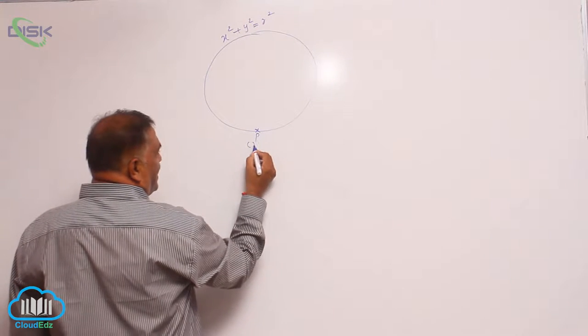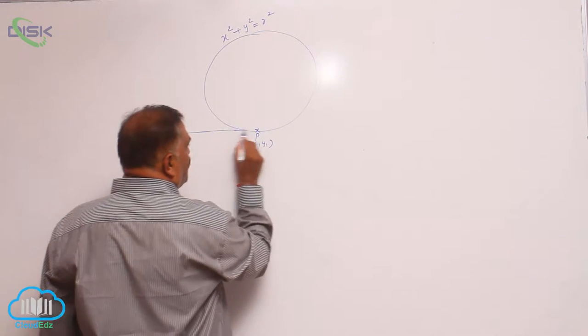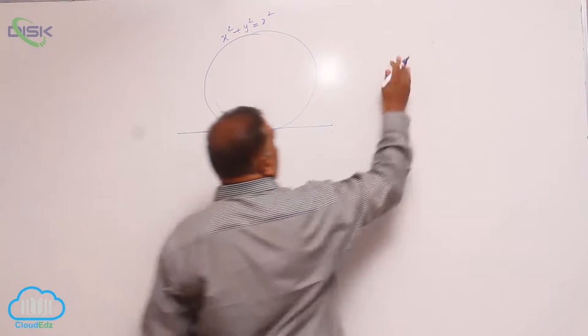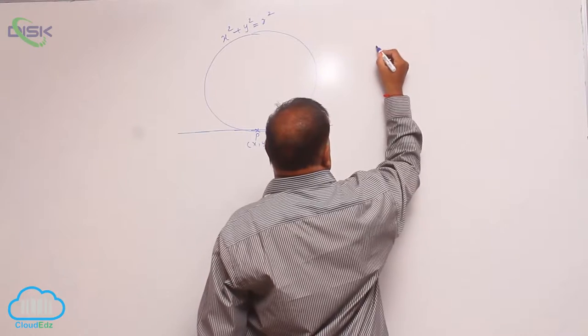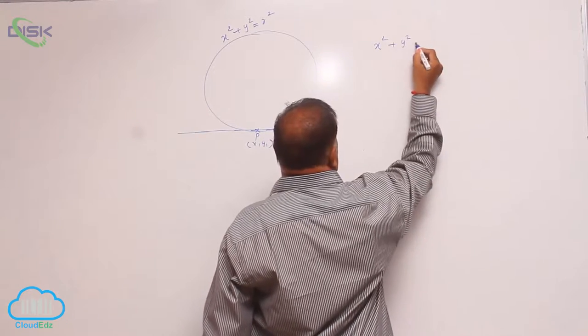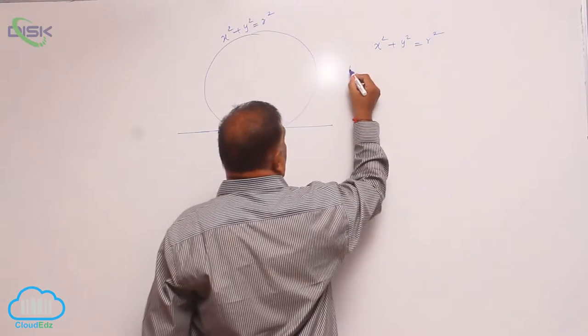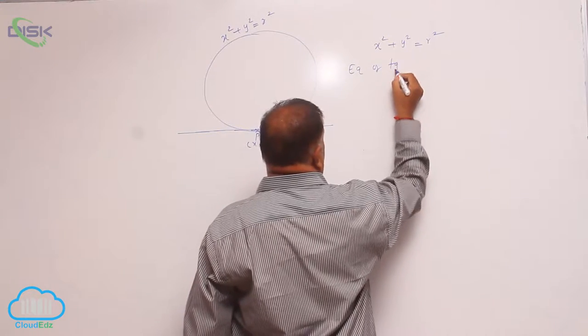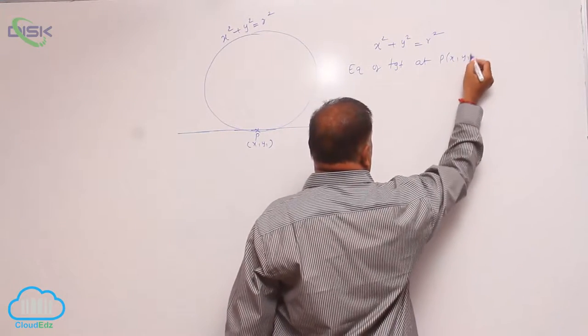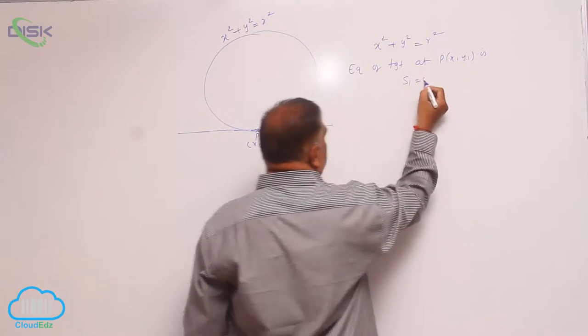Let us consider point P(x₁, y₁). At this point, if you want to write a tangent equation, the circle equation is x² + y² = r². The equation of tangent at P(x₁, y₁) is S₁ = 0.